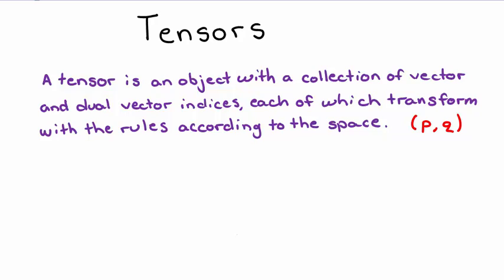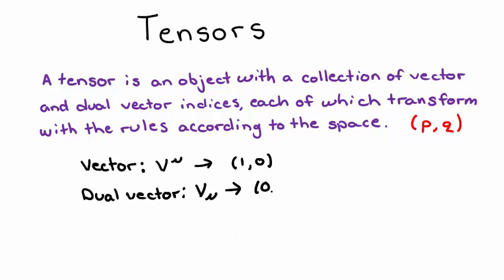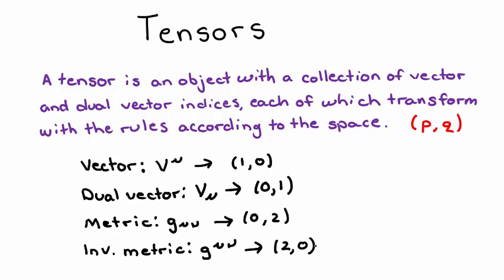Let's take a look at some of the things we've seen so far. We have vectors with one upper index, so we'll classify those as 1-0 tensors. Dual vectors with one lower index can be classified as 0-1 tensors. It follows that the metric is classified as a 0-2 tensor, and the inverse metric would be a 2-0 tensor.